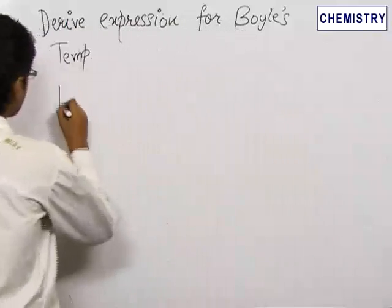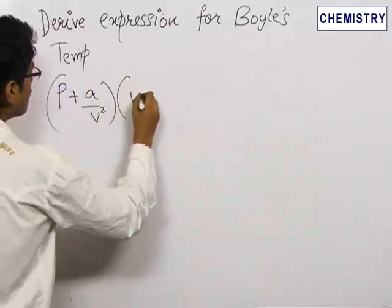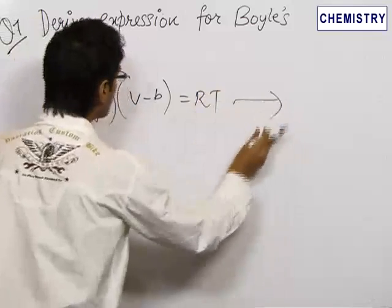So, we write the Van der Waals equation as P plus A upon V square into V minus B equals RT. Now, this is an important expression which needs to be remembered.